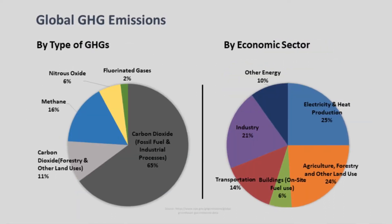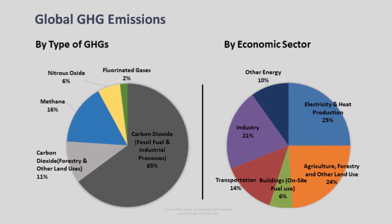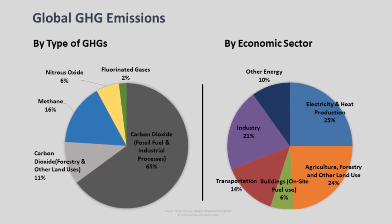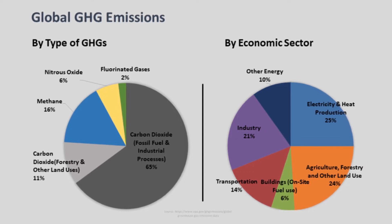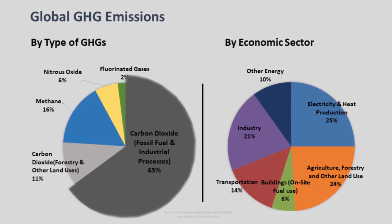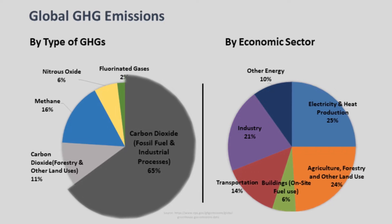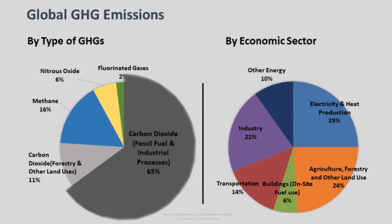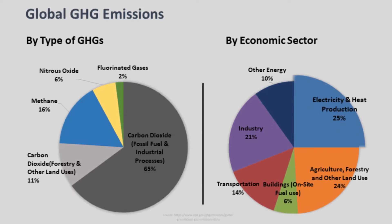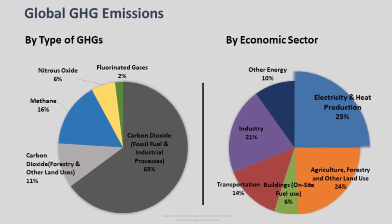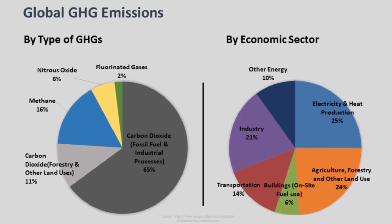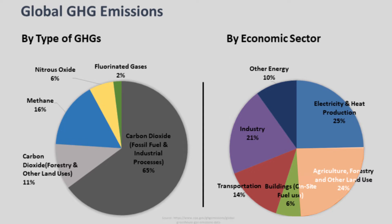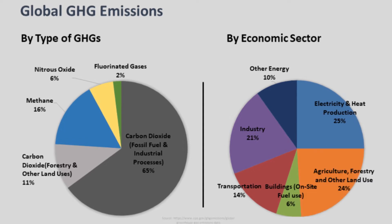GHG emissions can be represented by the type of gas and by the allocation in economic sectors. Globally, 65% of the total GHG emissions comprises carbon dioxide produced from burning of fossil fuels. Power and heat generation account for 25%, whereas agriculture and forestry account for 24% of GHG emissions.